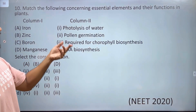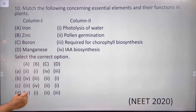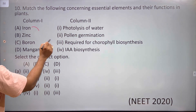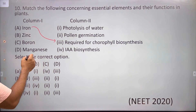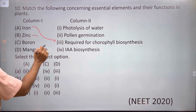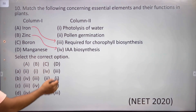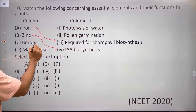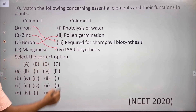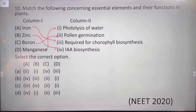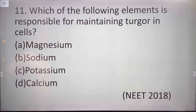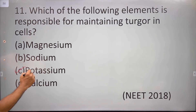Match the following concerning essential elements and functions of the plant. Iron is required for chlorophyll biosynthesis. Boron is involved in pollen germination. Manganese is involved in photolysis of water. Which of the following elements is responsible for maintaining turgor in cells? The answer is potassium.